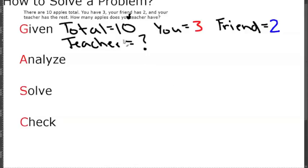Now let's analyze this. The total is 10, so your teacher cannot have more than the total - she has to have somewhere less than 10. But you already have 3 of those apples, and your friend has 2 of the apples, so her number is definitely going to be less than 10.